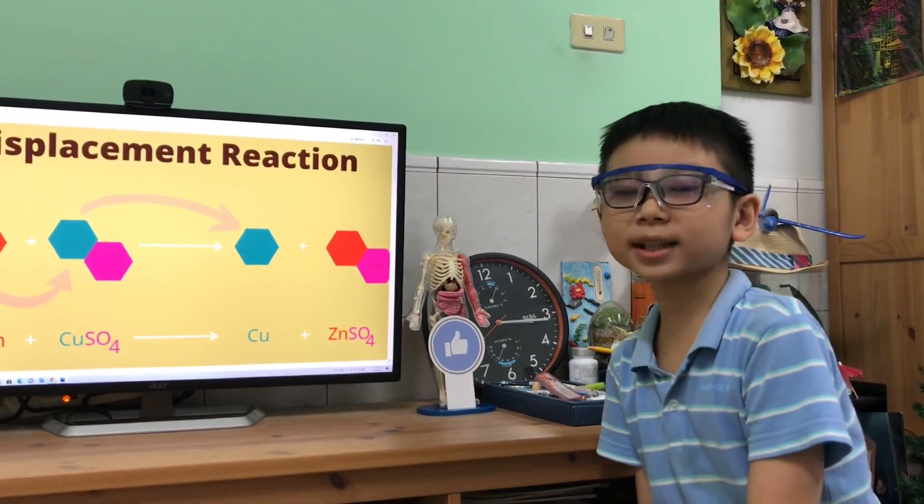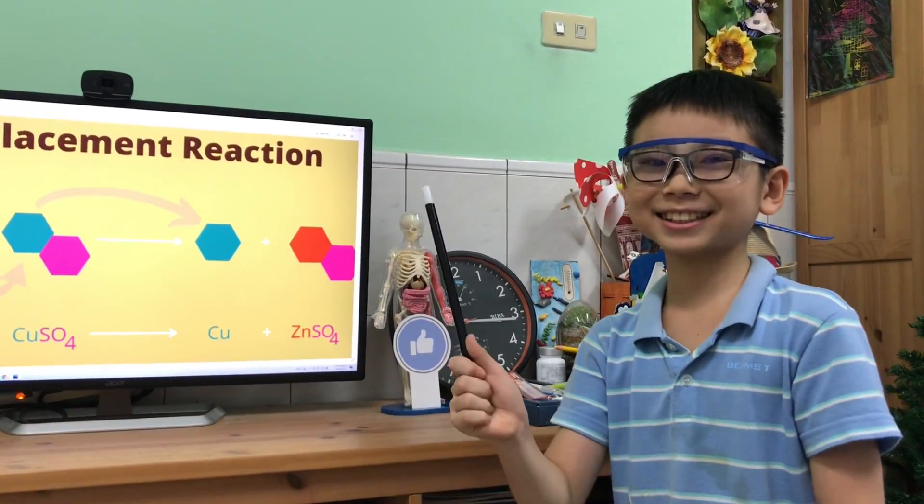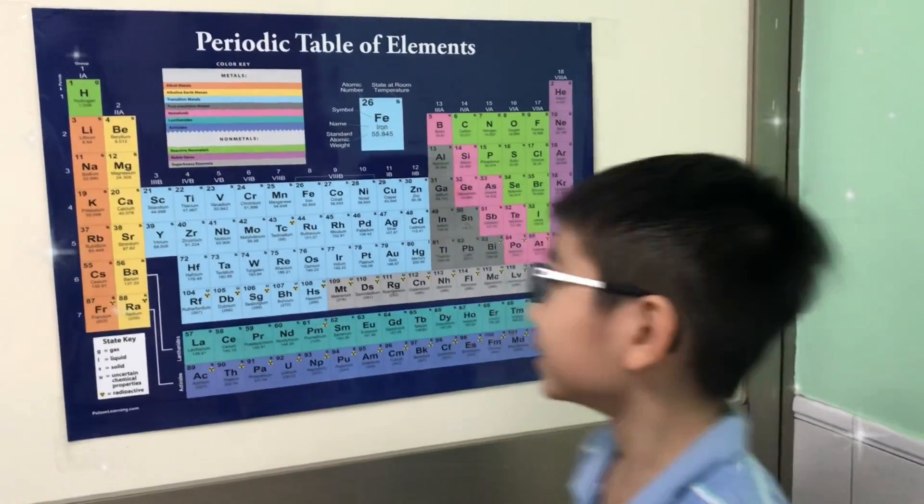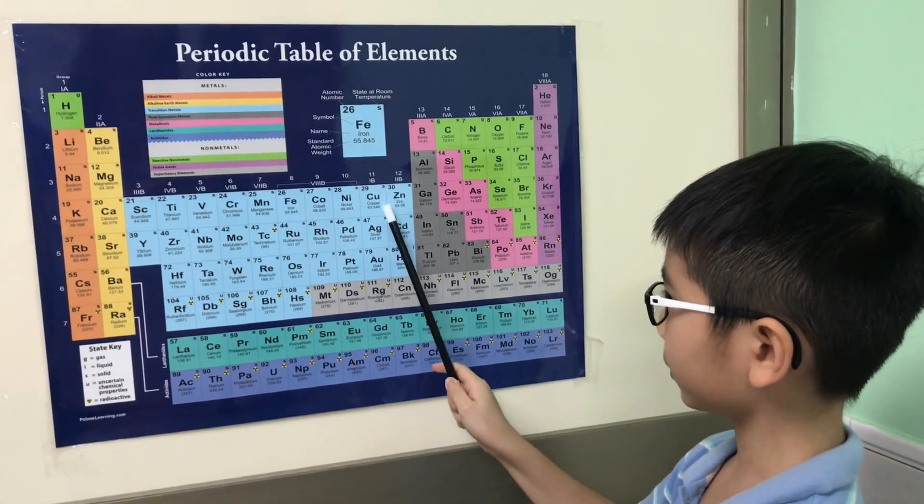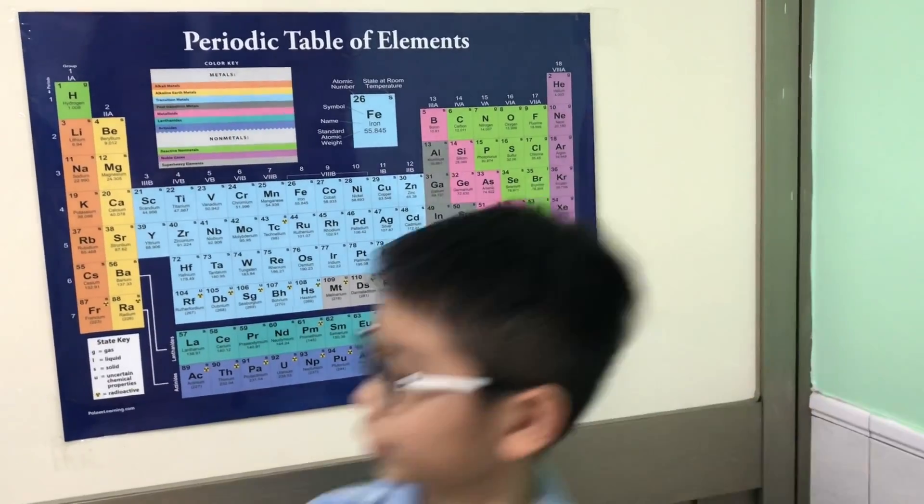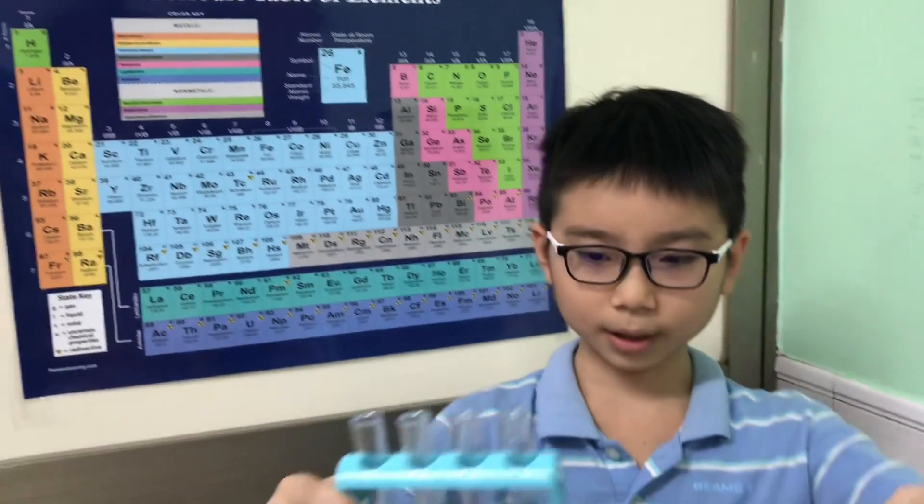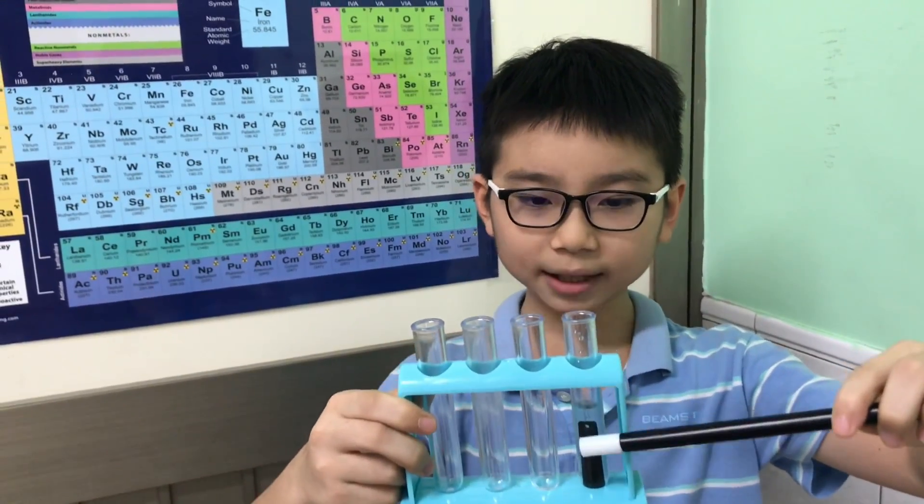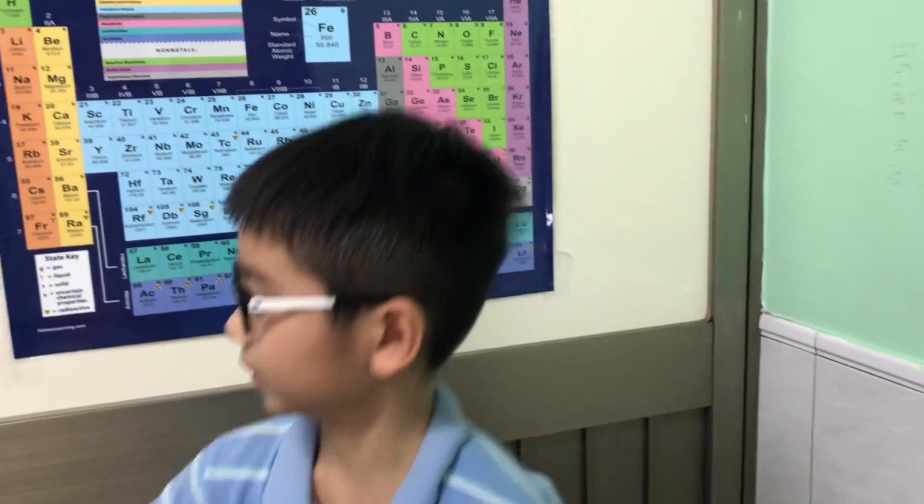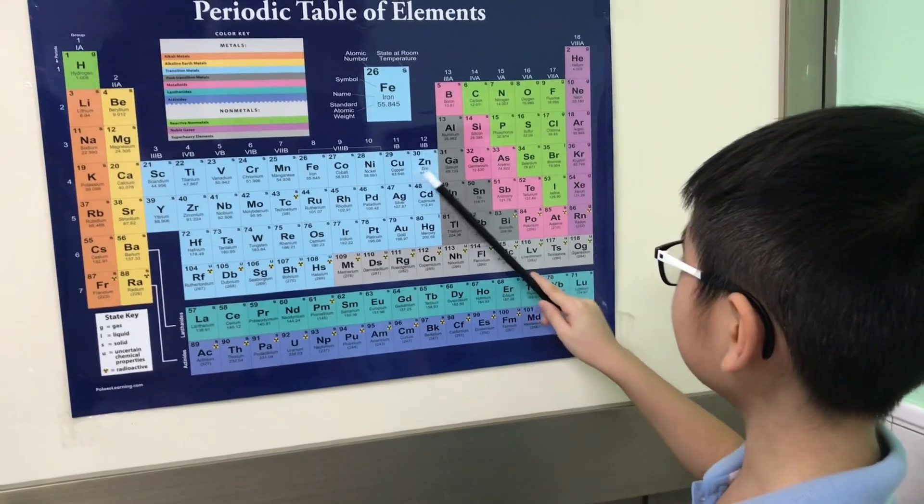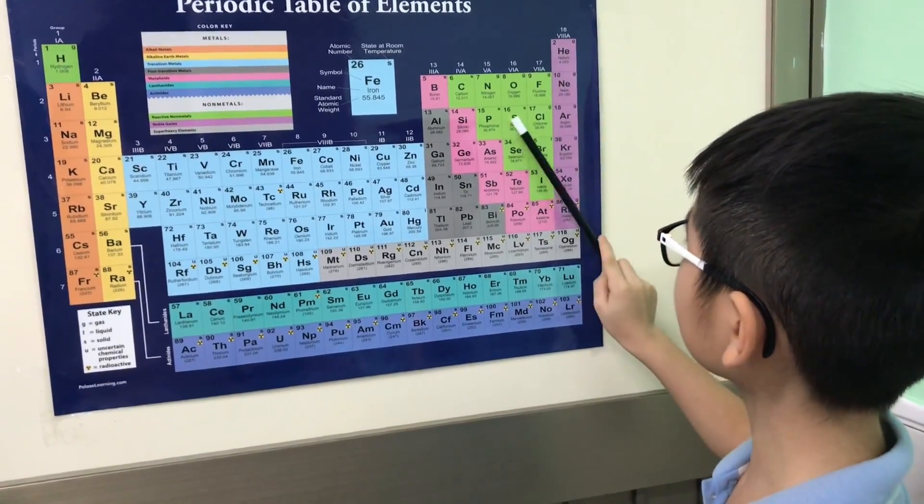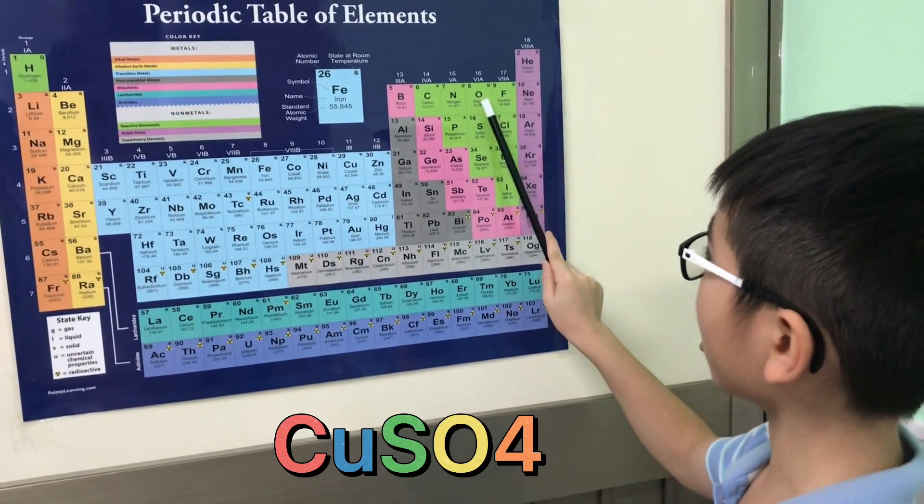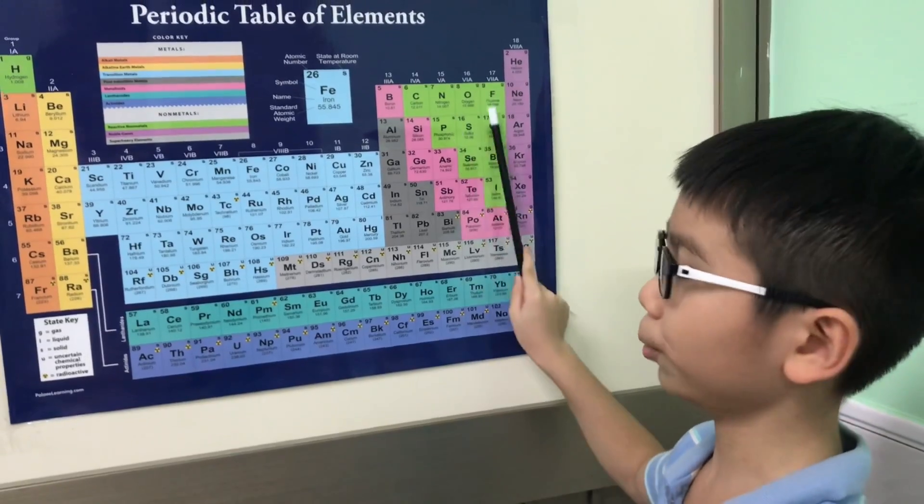And now we are going to explain this with the periodic table of elements. This is the periodic table. And on the 30th element, which is zinc, we have this plate, which is this metallic gray color. And it is mixed into the copper sulfate, which is Cu, S, O, and four atoms of O which is oxygen.